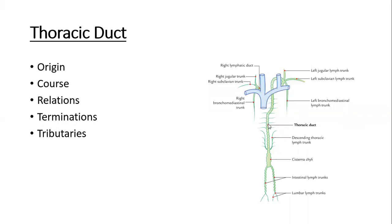Regarding the tributaries of the thoracic duct: it receives lymphatics via the cisterna chyli from the lower abdomen — that is, the lower limbs and the lower part of the abdomen. In the thoracic cavity, it receives lymphatics from the middle and superior intercostal spaces of both sides. It also receives tributaries from the posterior mediastinal structures. Near its termination at the venous angle, it also opens to receive the left jugular, left subclavian, and broncho-mediastinal lymphatic trunks.